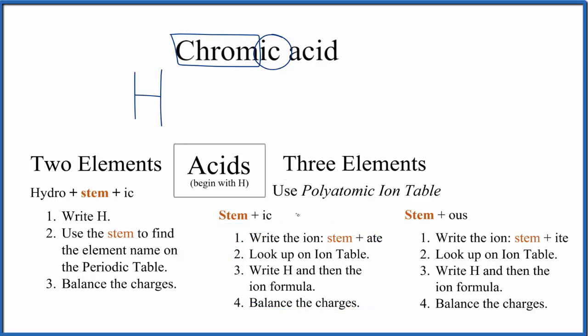Stem plus -ic. We'll use these guidelines to write the formula. First, we'll write the stem, that's the chrome, and then instead of -ic, we're going to put -ate at the end of it. So we have chromate, and the chromate is the ion that we're going to attach to the hydrogen here.